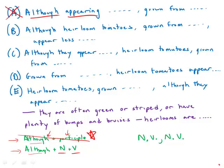In B we have although heirloom tomatoes, then a participle phrase, appear. So heirloom tomatoes appear—bona fide noun and verb. So that works.